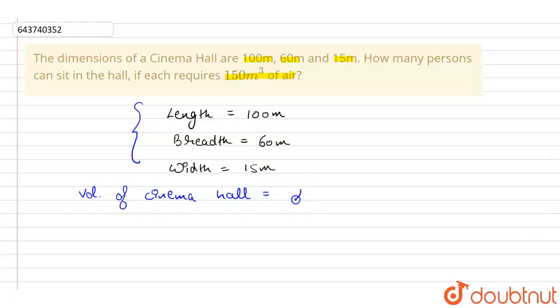So the volume of rectangle is equal to length into breadth into height, that will be equal to 100 into 60 into 15. If we simplify this, this will come out to be equal to 90,000 meter cube. So this is the volume of the cinema hall.